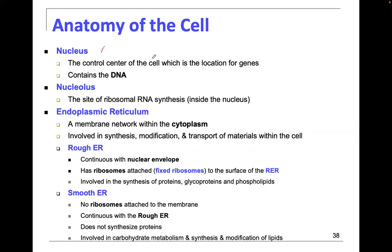The nucleus is the control center of the cell and the location for all your genes. It contains your deoxyribonucleic acid — the DNA — which is the instruction template with all your codes. The nucleolus, which is deep within the nucleus, is the site of ribosomal RNA synthesis.